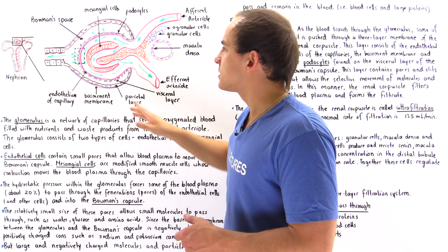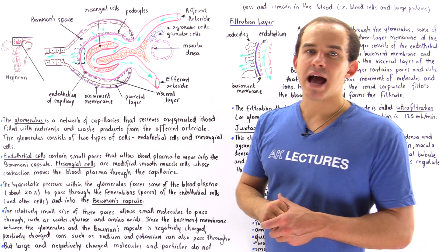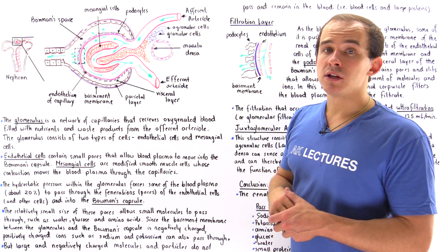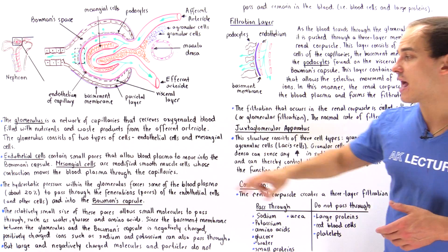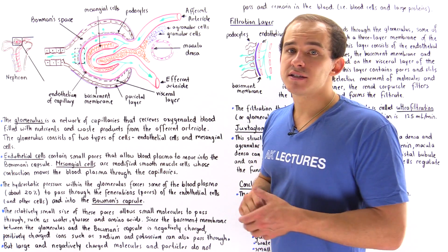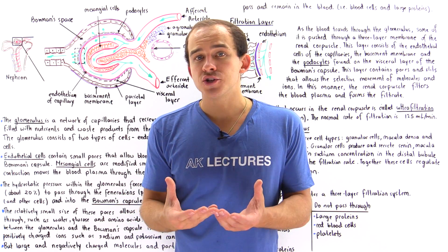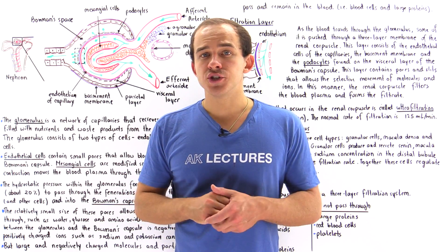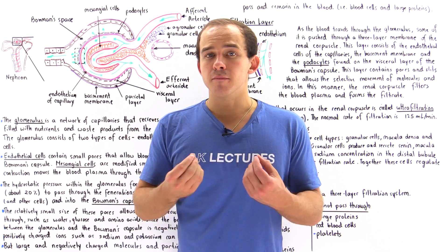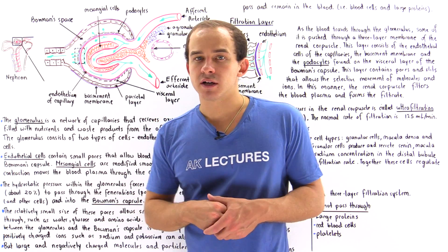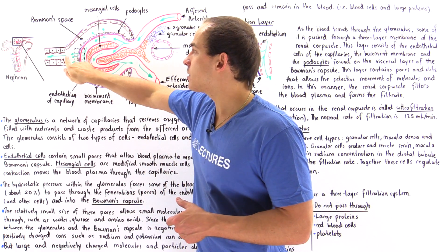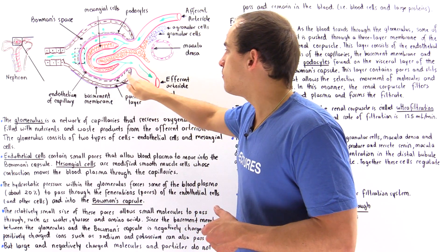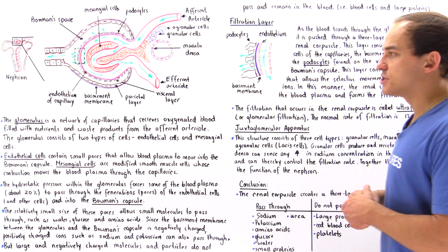The glomerulus consists of two types of specialized cells. Lining the capillaries of the glomerulus are cells known as endothelial cells. Endothelial cells are involved in filtration — they contain tiny pores, tiny fenestrations, that are responsible for allowing the movement of small particles and molecules across this layer and into the Bowman's space.